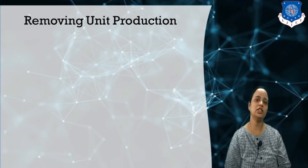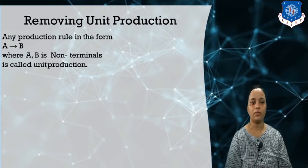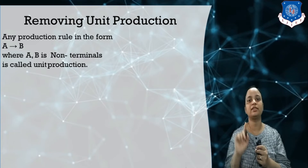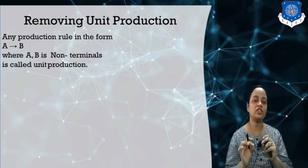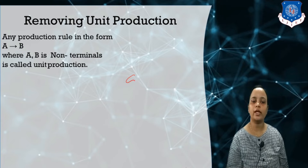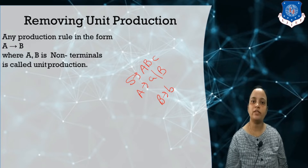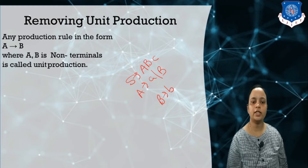First, let's understand which productions are called unit productions. Any production rule in the form A derives V, where the right hand side contains a single non-terminal only, is called a unit production. For example, if the grammar is A derives ABC, that is not a unit production because it contains two non-terminals and one terminal.